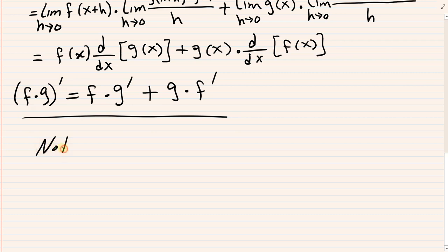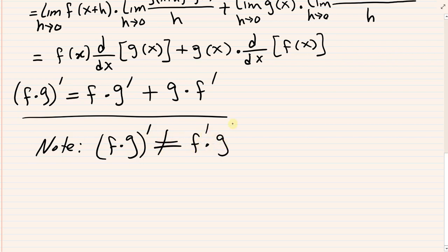So the derivative of the product f times g is f times g prime plus g times f prime. In words: the derivative of the product of two functions is the first function times the derivative of the second, plus the second function times the derivative of the first. And that's the proof of our first theorem.